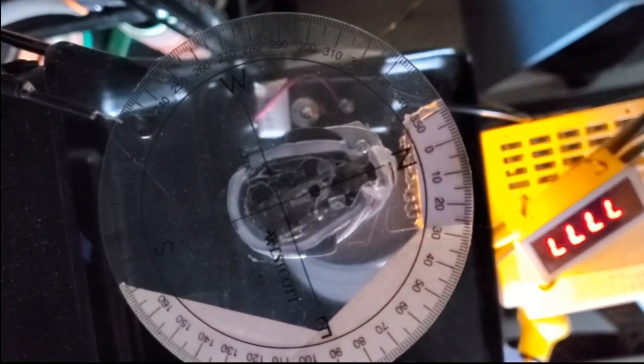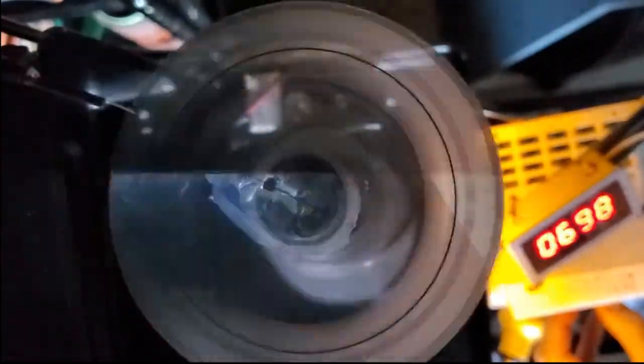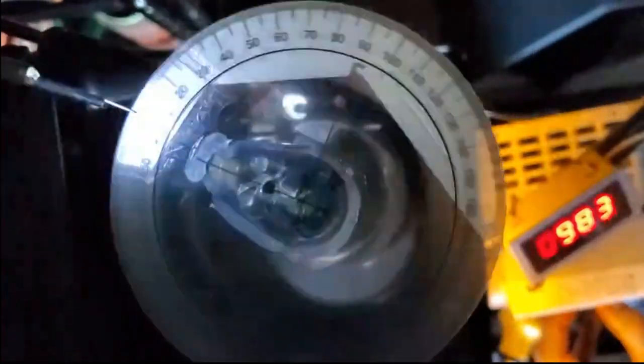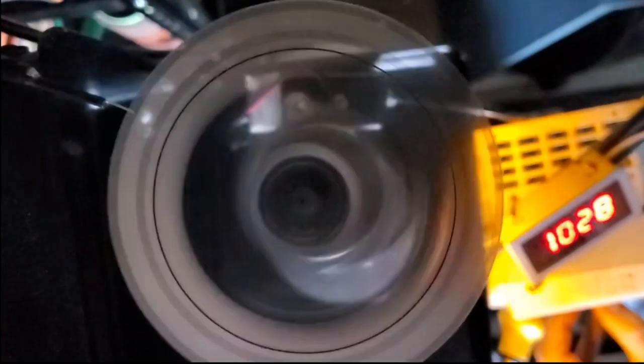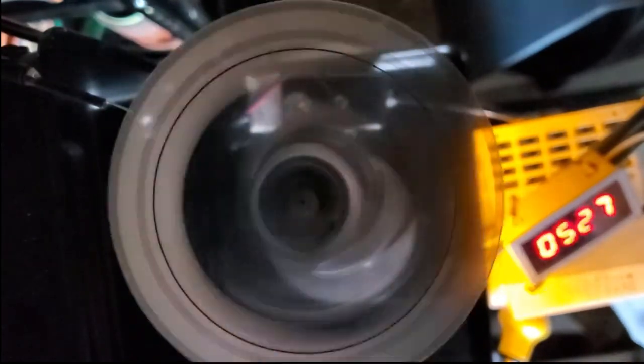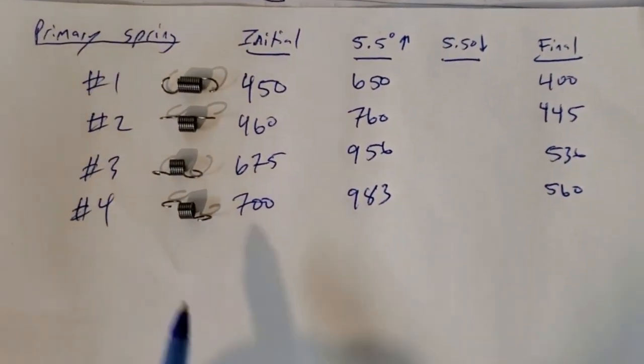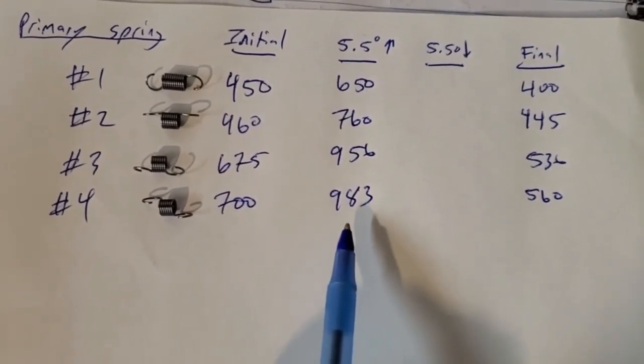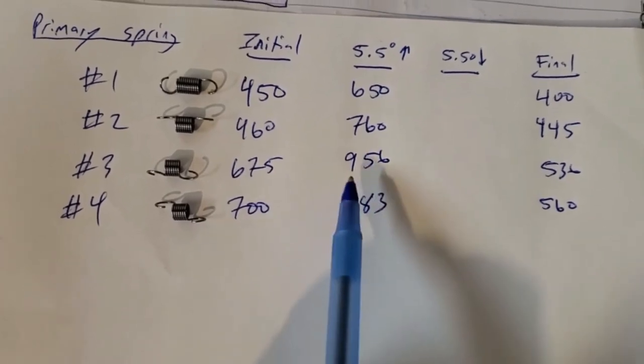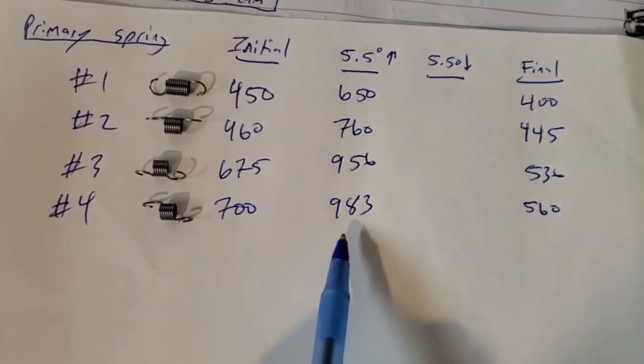I found a slightly stiffer spring, so I'm going to test spring number four. It releases about 700 RPMs, 5.5 is about 983, and then it returns to zero at about 560 RPMs. I think the spring will work. Number four was the spring that I'm going to go with because it reaches 5.5 degrees around 1000 RPMs, a little bit faster than spring number three, and the return value is 560, which is slightly higher than number three. Overall number four is the ideal choice.